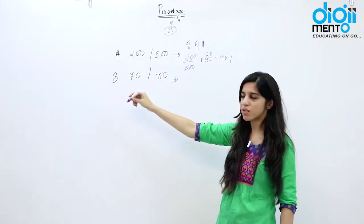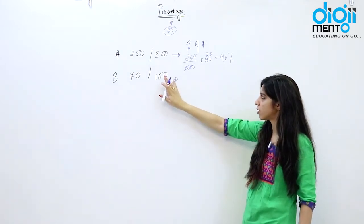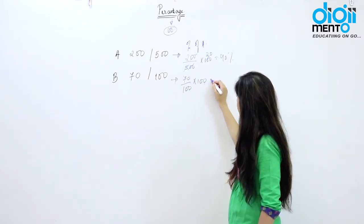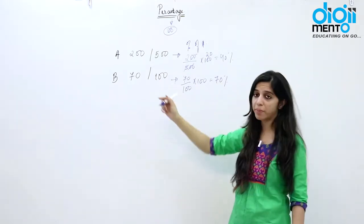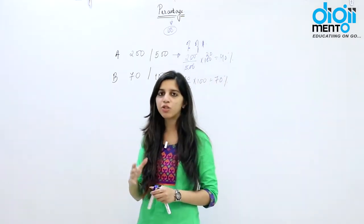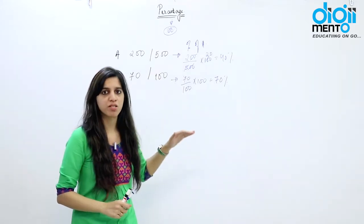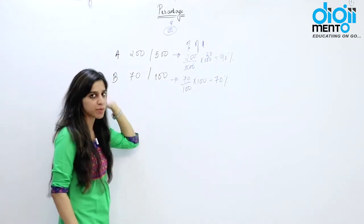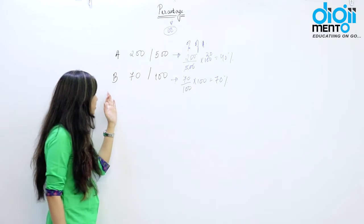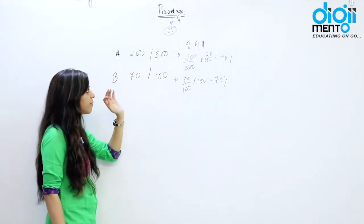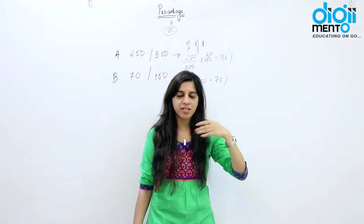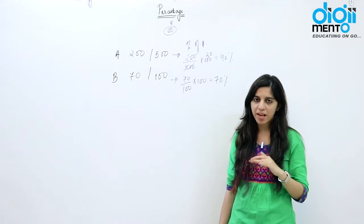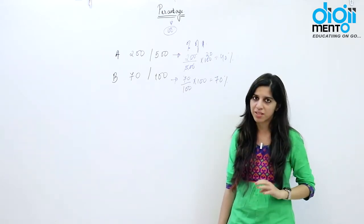Similarly for student B, whose total marks were already 100: 70/100 × 100 = 70 percent. Now it is valid to make a comparison. Student B scored 70 percent marks whereas student A scored only 40 percent marks. Clearly B performed much better than A. Comparing raw marks could not give us this idea because the points of reference were different.